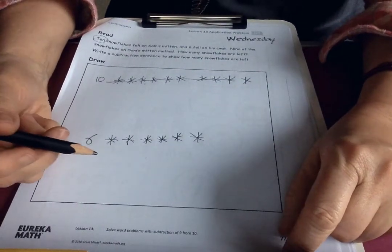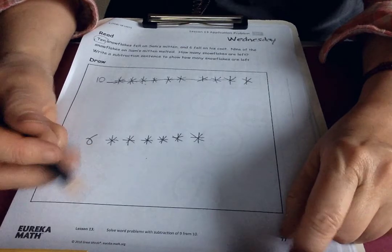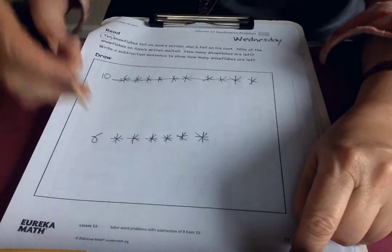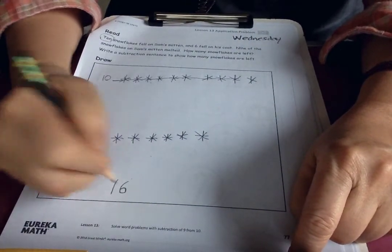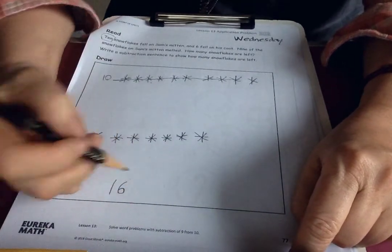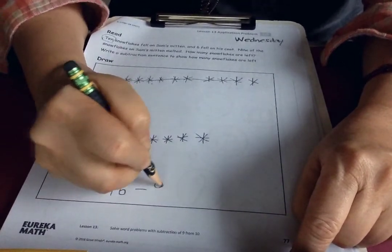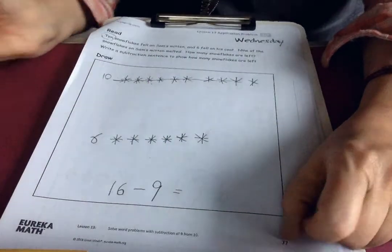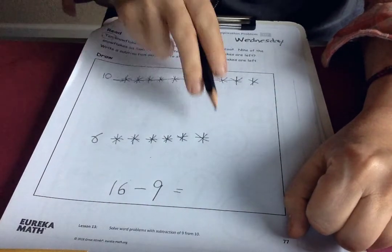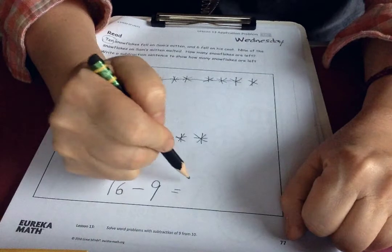And they want me to write a number sentence for it. So altogether there were 16 snowflakes. We worked that out, right, because it was six plus ten. And nine melted. So how many are left? Six and one. Seven.